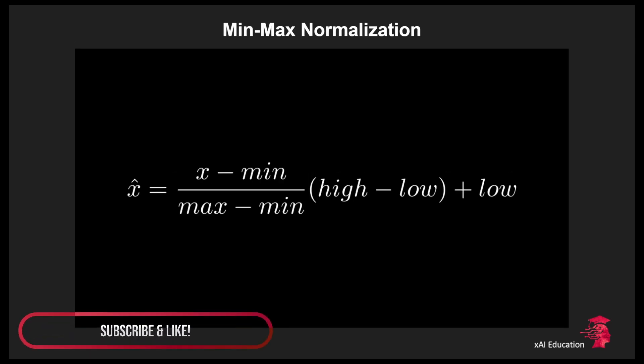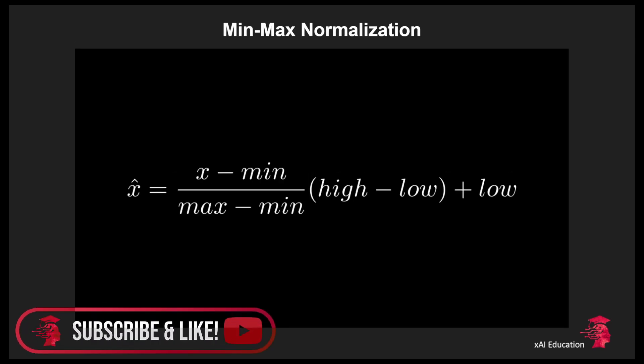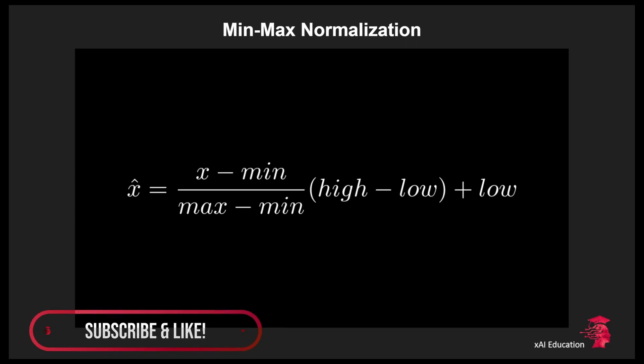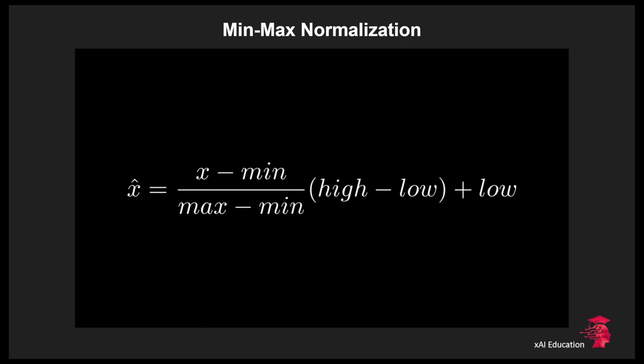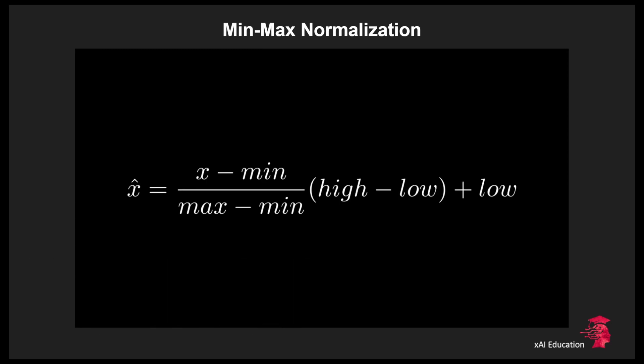The first feature scaling technique is the min-max normalization. This scaling technique is useful if we want to choose the range of our scaled value x hat. So for instance when we want to scale a feature to the interval 0 to 1 we can do this with this technique. In this case high would be equal to 1, low equal to 0, and max and min are the maximum and minimum values of our feature. Typically ranges are either between minus 1 and 1 or 0 and 1.